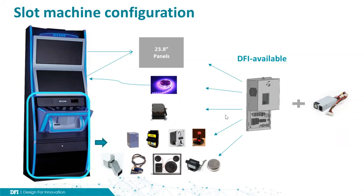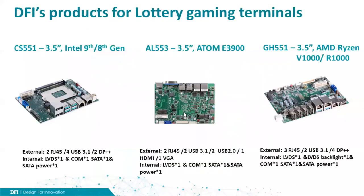Now we finish the first section and come to the most interesting part: introducing DFI products for the different gaming markets. From the earlier introduction about lottery terminals, we mentioned the small-size main board. One of DFI's strengths is that we have a range of small main boards from 1 and 1.8 inch to 4 inch. Here I introduce three 3.5 inch main boards, as I think the size is quite good for a post machine. The first one is CS551, which is equipped with Intel's 8th and 9th generation CPU. In this small-size board, we have abundant I/O ports to connect with different peripherals, plus one LVDS port for the touch panel and a SATA port for storage.